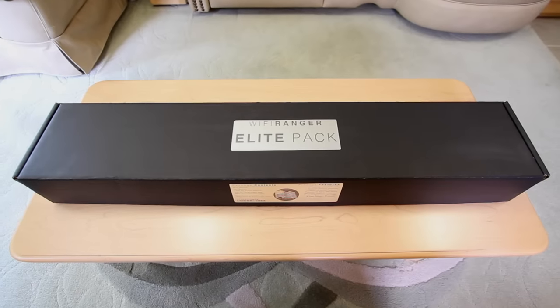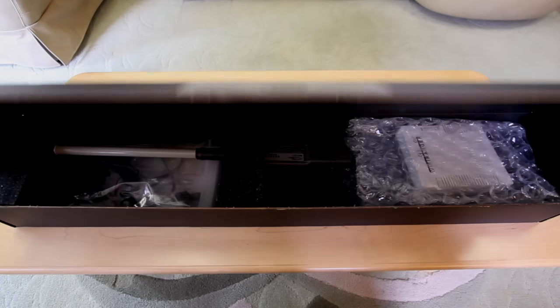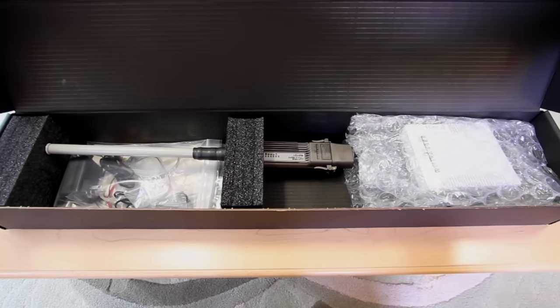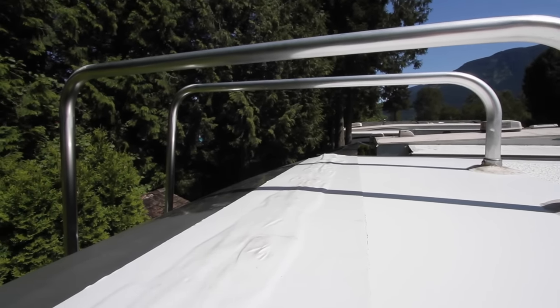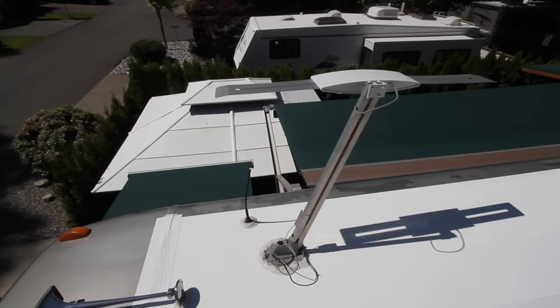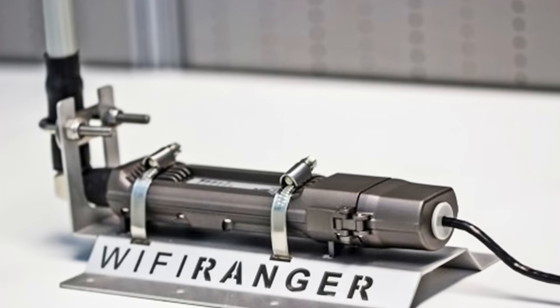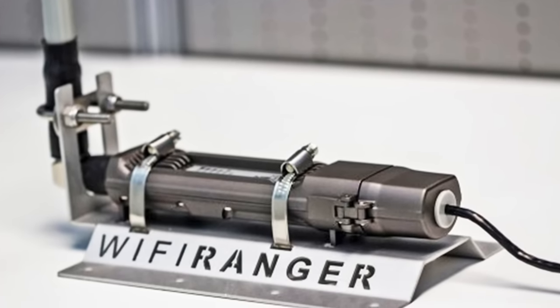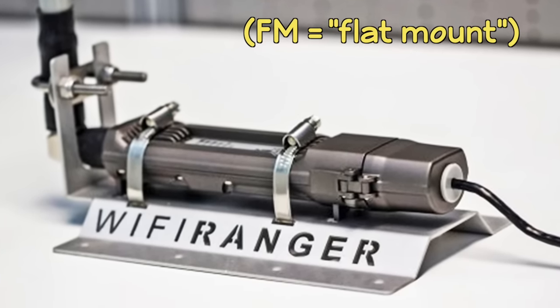We ordered the Wi-Fi Ranger Elite Pack which includes everything we need to strengthen our connection to weak Wi-Fi signals. This model is perfect for RVs with a built-in ladder or a batwing TV antenna or some other vertical structure to mount it on. If you want to flat mount a Wi-Fi Ranger directly to the roof, the Elite Pack FM is the model to order.